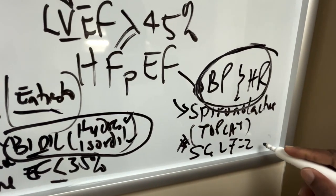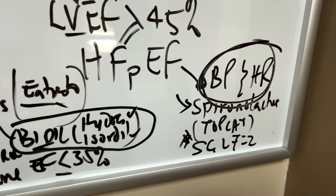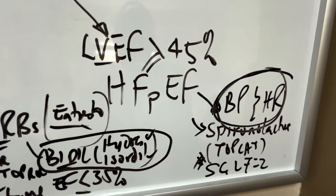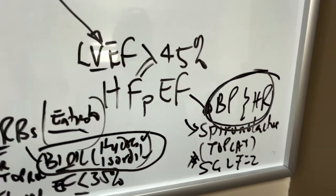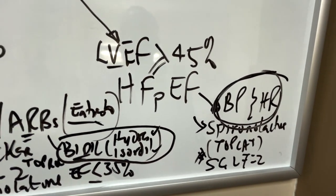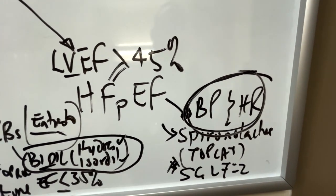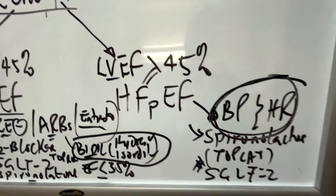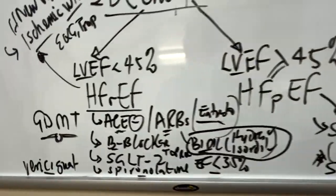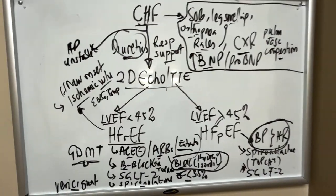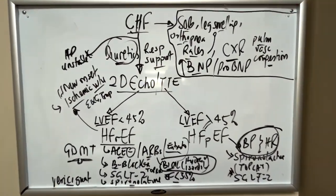SGLT-2 inhibitors also are starting to have a buzz with heart failure with preserved ejection fraction. Remember I said they do everything. But these medications are still in some of the preliminary trials, it's not established yet. But I think down the line you'll just use it for everybody: diabetes, heart failure with reduced ejection fraction, heart failure with preserved ejection fraction, and every other disease.